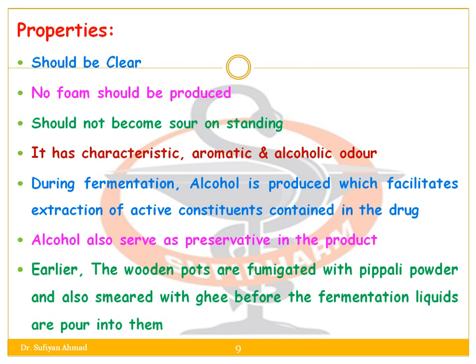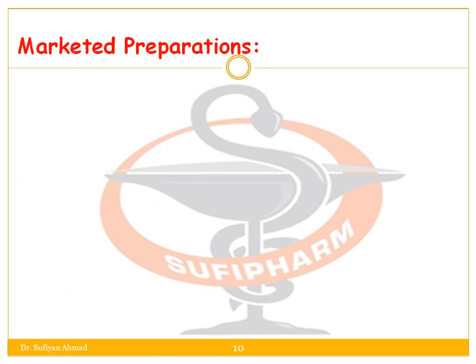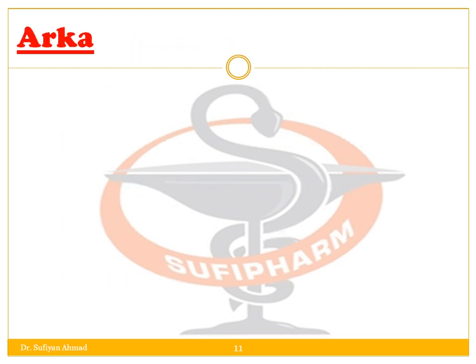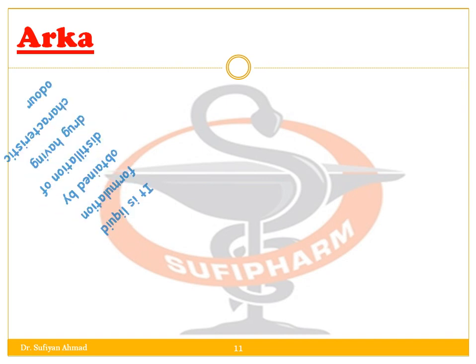Examples of marketed preparations of Asava include Kumari Asava, Madhvasava, and Punarnava Asava, and Chandana Asava. Examples of Arista include Dashamoola Arista, Raksha Arista, and Ashoka Arista. Next is Arka — it is a liquid formulation obtained by the distillation of a drug having a characteristic odour.